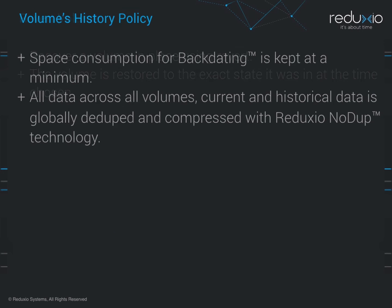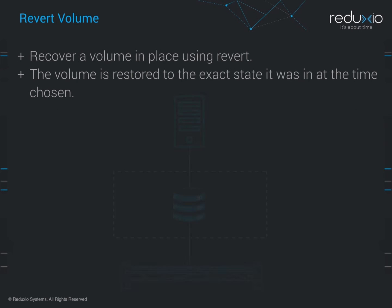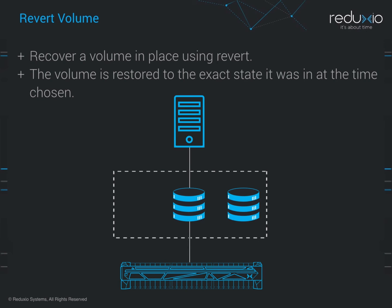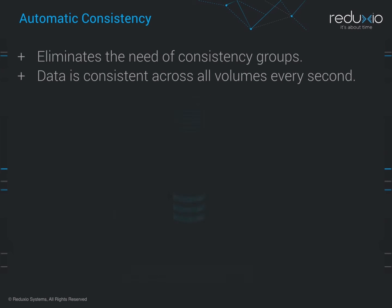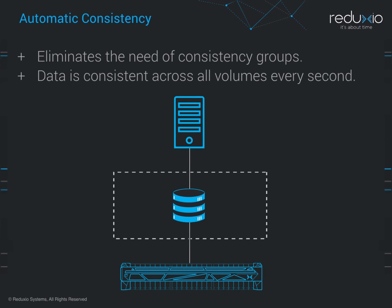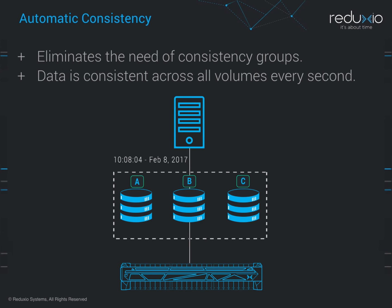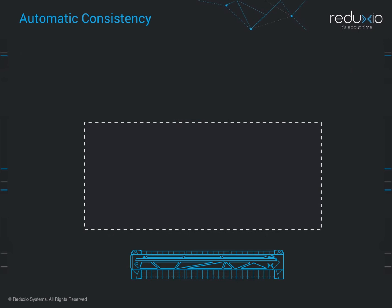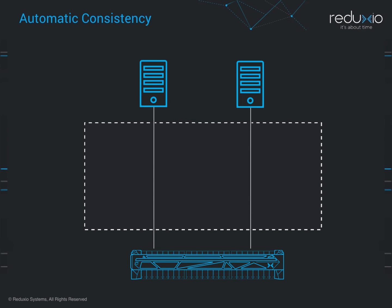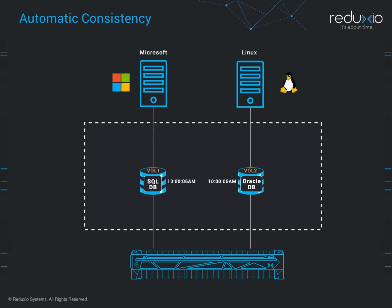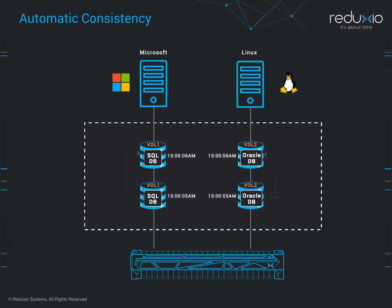Back to data recovery. The second option is to recover a volume in place using Revert. The volume is restored to the exact state it was in at the time chosen. Backdating eliminates the need for consistency groups to recover complex applications, since data is consistent across all volumes every second. For example, a business application running on several servers with different operating systems and different volumes — to recover this application using backdating, all you need to do is backdate each volume to the exact same time.